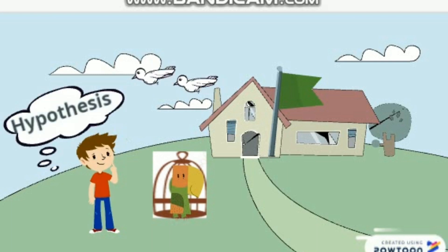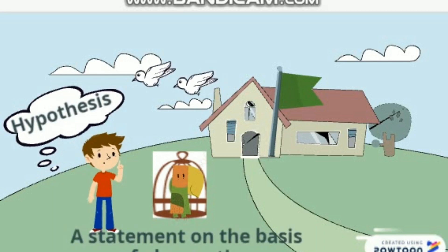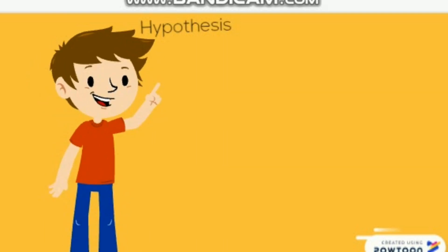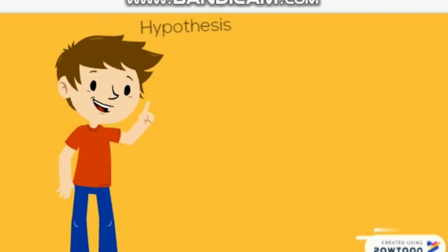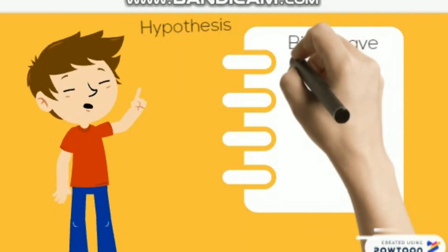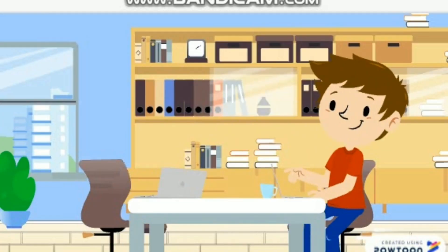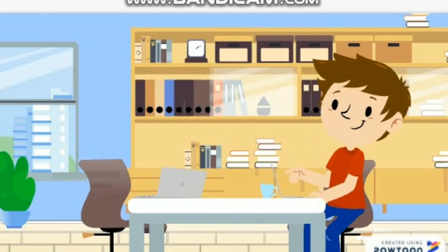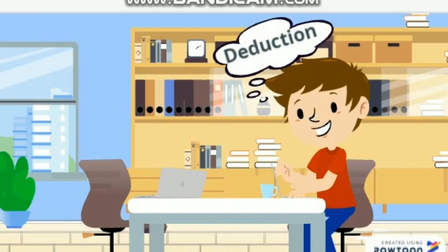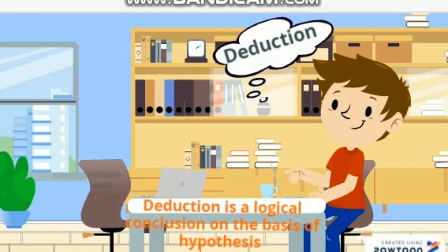On the basis of his observations, Tim is now thinking about making a hypothesis. A hypothesis is a statement made on the basis of observation. Tim notes down his hypothesis: birds have wings and they can fly.